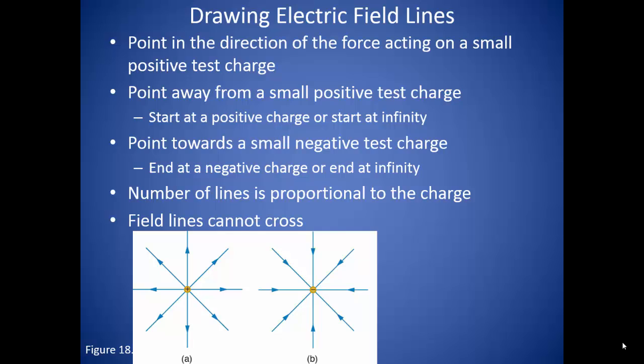So we can say that electric field lines start at a positive charge, or they start at infinity within our diagram. We can also say that they end at a negative charge, or end at infinity within our diagram. It just depends on whether or not there is another charge present in our picture.